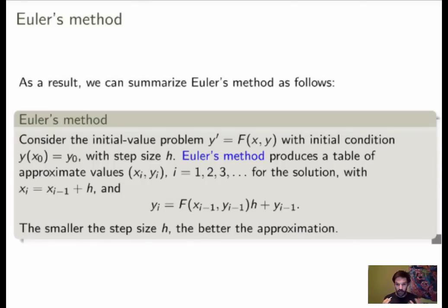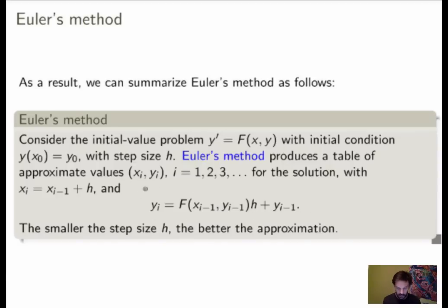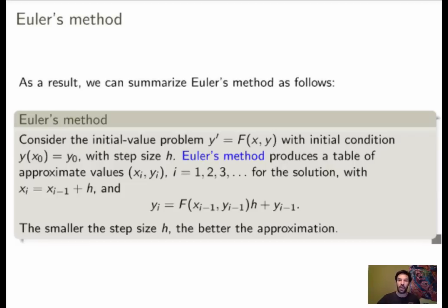So, Euler's method is summarized as follows. You start with the initial value problem — a differential equation with an initial condition — and fix the step size h. Euler's method produces a table of approximate values (xᵢ, yᵢ), where each xᵢ = xᵢ₋₁ + h, and the yᵢ are determined by the formula yᵢ = yᵢ₋₁ + h·f(xᵢ₋₁, yᵢ₋₁), meaning each point lies on the tangent line given by the slope field at the previous point. These data points give a good numerical approximation of the solution, and the smaller the step size, the better the approximation.